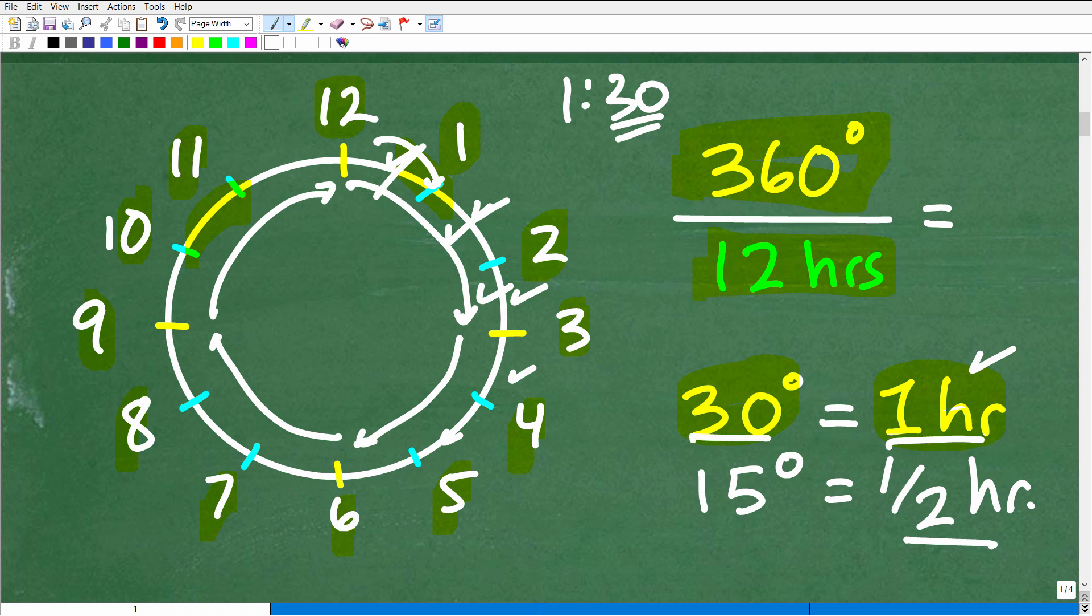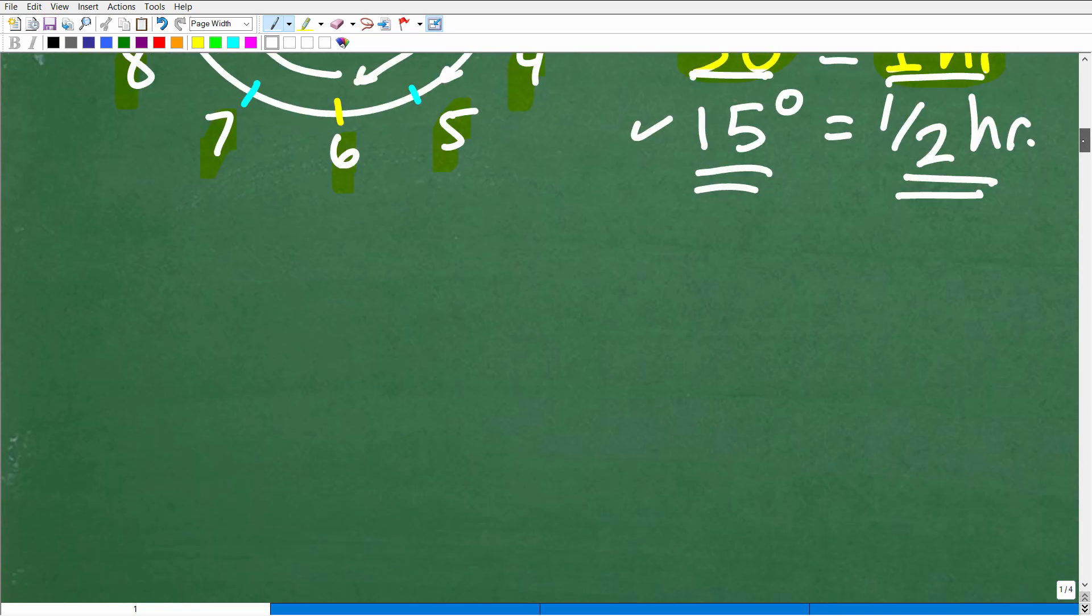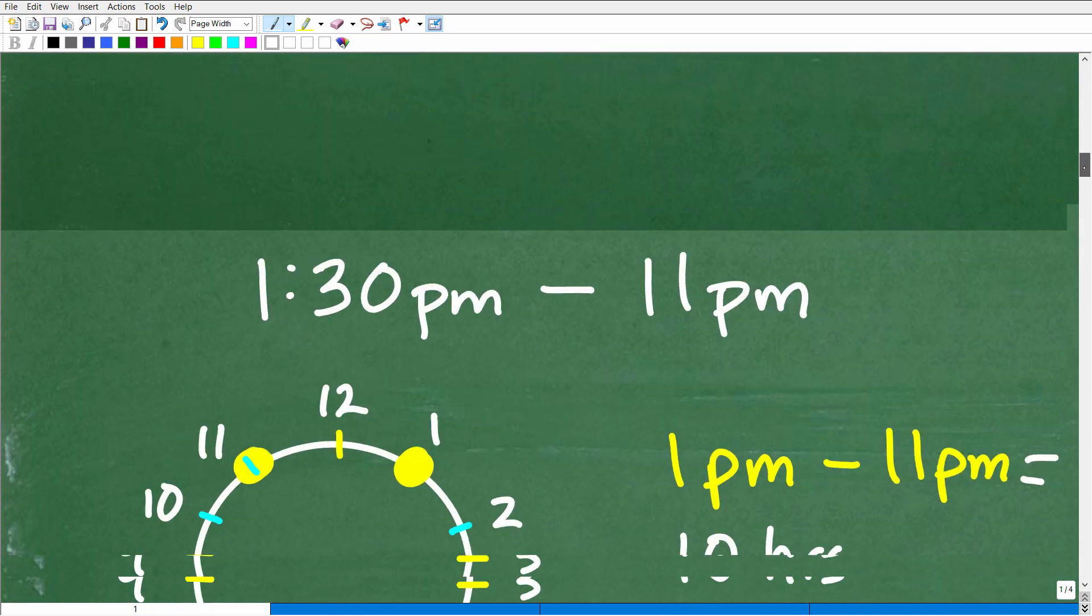So, if every hour is 30 degrees, well, a half hour would just be half of that would be 15 degrees. So, this kind of sets up our little conversion right here between hours and degrees. So, now we just have to kind of reason through this.